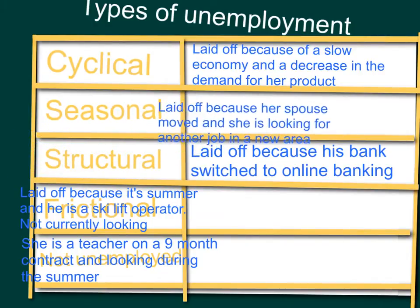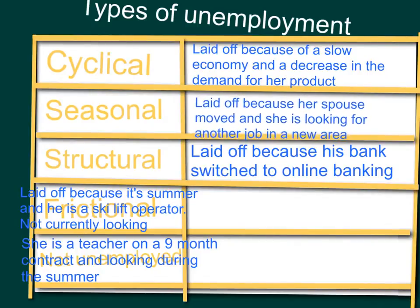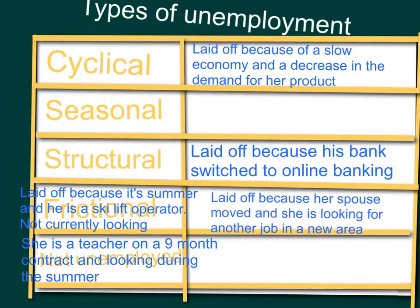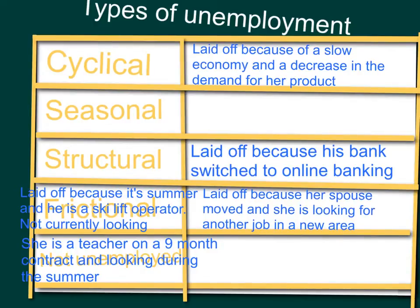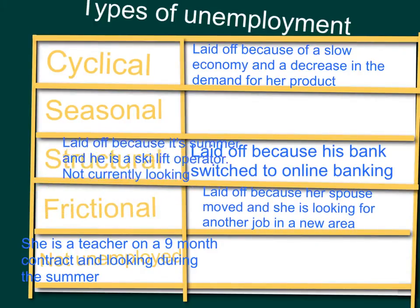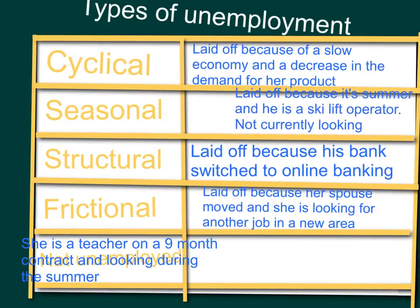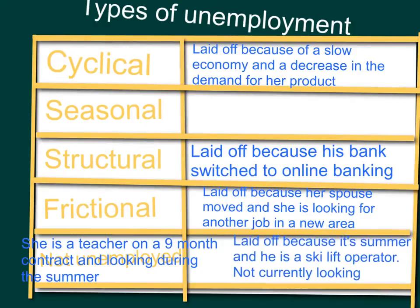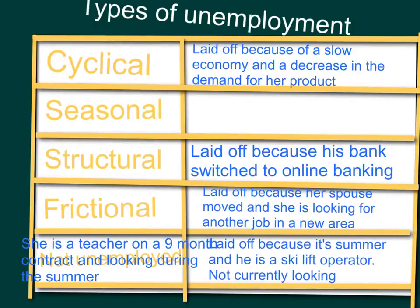This one: laid off because her spouse moved and she's temporarily looking for another job. The spouse is moving, so that's frictional. This one: laid off because it's summer — he's a ski instructor and it says he's not currently looking. So we've got to put that one under 'not unemployed' — not looking.